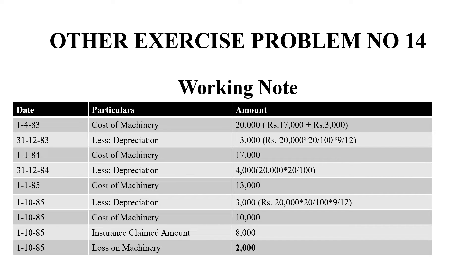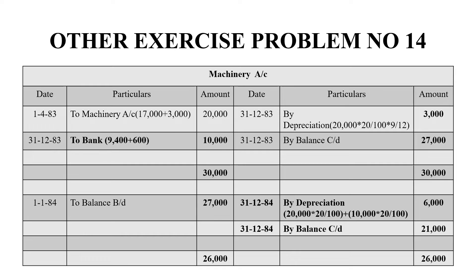But the value of the machinery is 10,000 as on that date, and the insurance amount received is 8,000 rupees. So there is a 2,000 rupees loss. Now we are creating the machinery account. In 1.4.83, we purchased machinery for 20,000 — that is 17,000 plus 3,000 rupees.